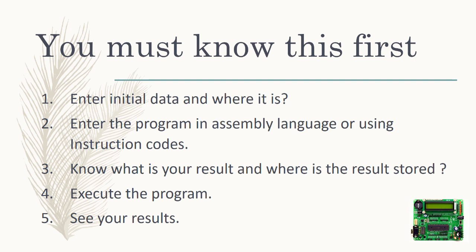You must also know what your result is and where the result is to be stored. For example, if you add 3 and 4 to get 7, you must know at what memory location to check the result — for example, memory location C102H. After execution, you will check that particular memory location to see whether you are getting the correct answer or not.